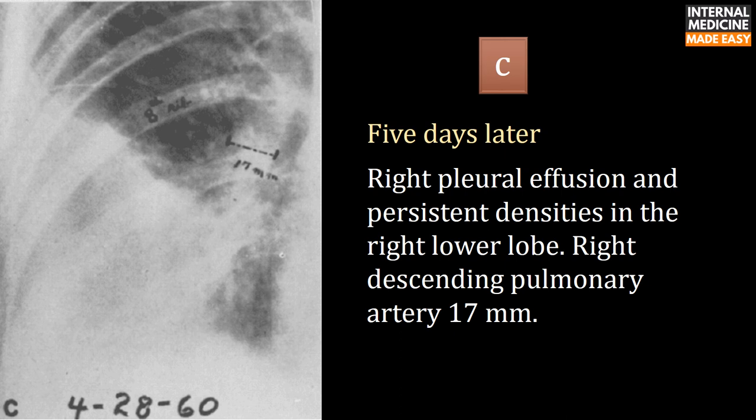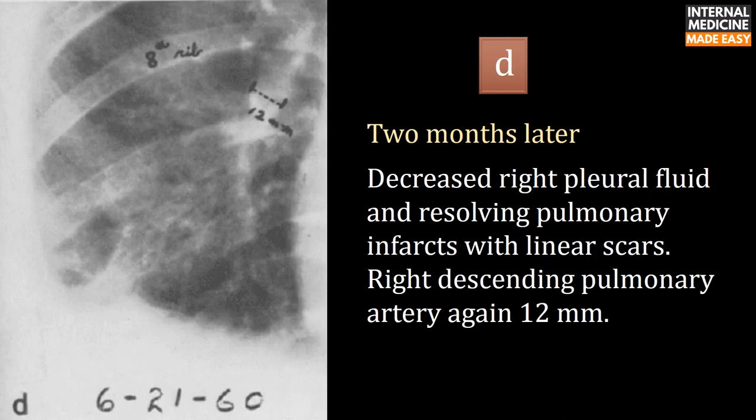Five days later, there is right pleural effusion and persistent densities in the right lower lobe, with the right descending pulmonary artery remaining at 17 mm. Two months later, decreased right pleural fluid and resolving pulmonary infarcts with linear scars are seen, and the right descending pulmonary artery has returned to 12 mm.